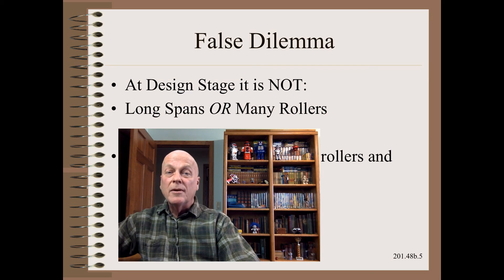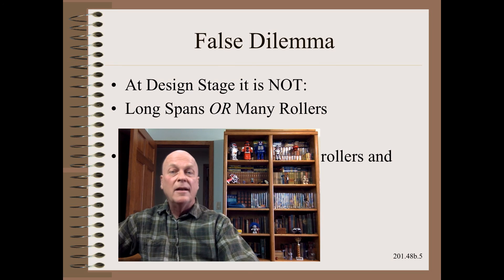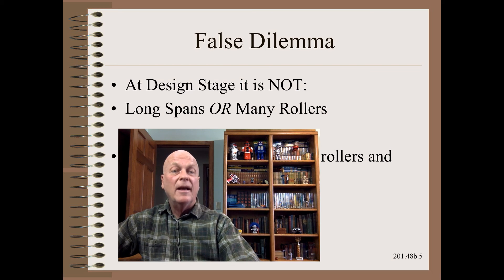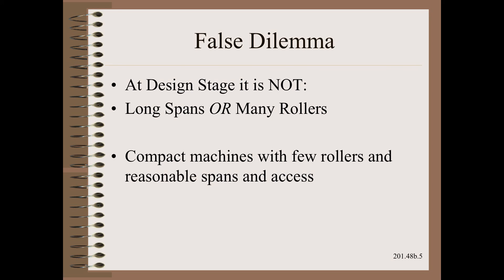Before we leave this not-so-important topic, I want to make sure that we don't succumb to a false dilemma. As I teach in my critical thinking class, a false dilemma is a fallacy — an error in thinking — that supposes that there are only two choices, usually both ugly. There is no dilemma at the design stage. At the design stage, it is not long spans or many rollers — we want neither. What we want is a compact machine with few rollers, reasonable spans, and reasonable access. It is the engineer's responsibility at the very initial layout stage to make sure everything reasonable is done before moving on.